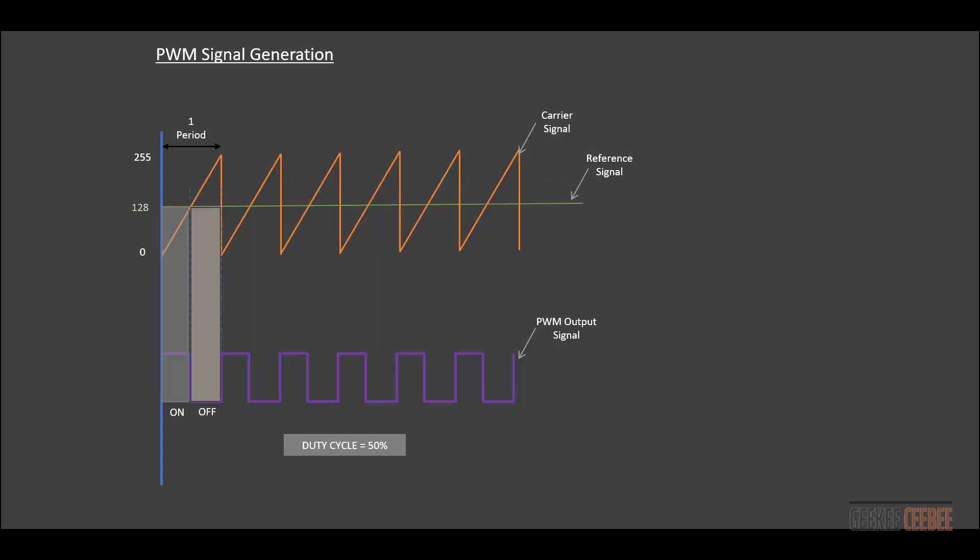Similarly, if we wanted a 50% output duty cycle, we'd set the reference signal to 128 — that's 128 over 255.